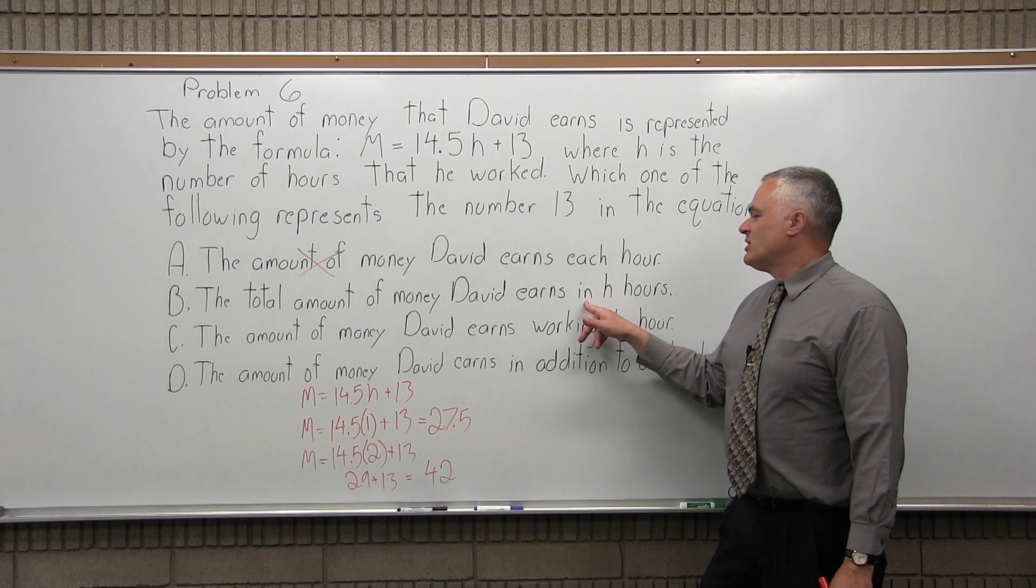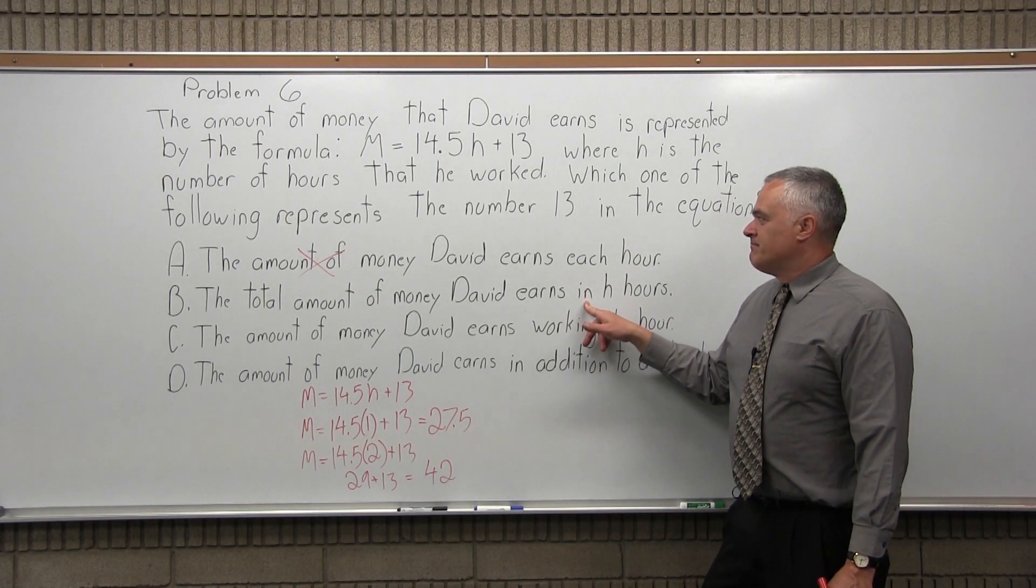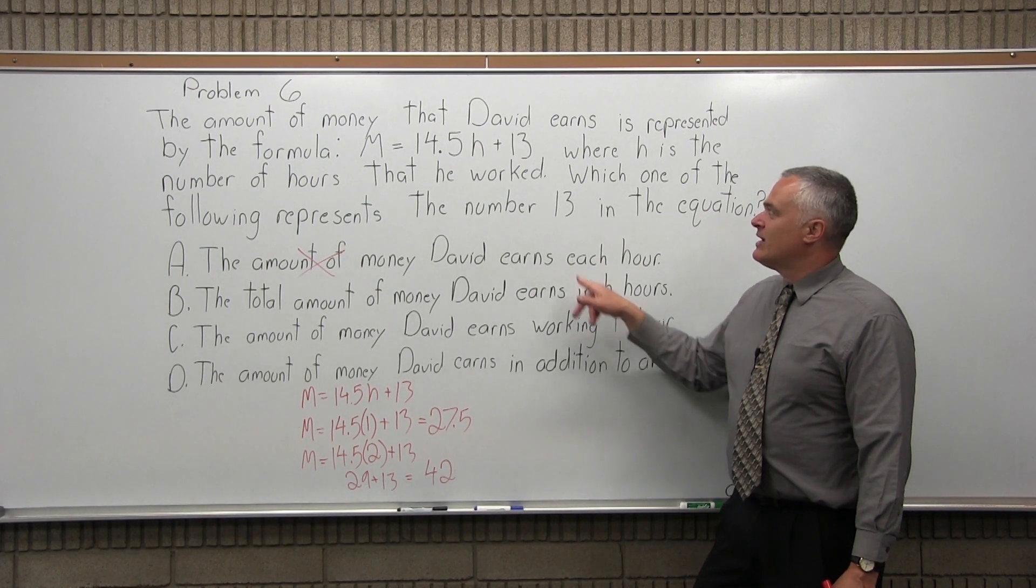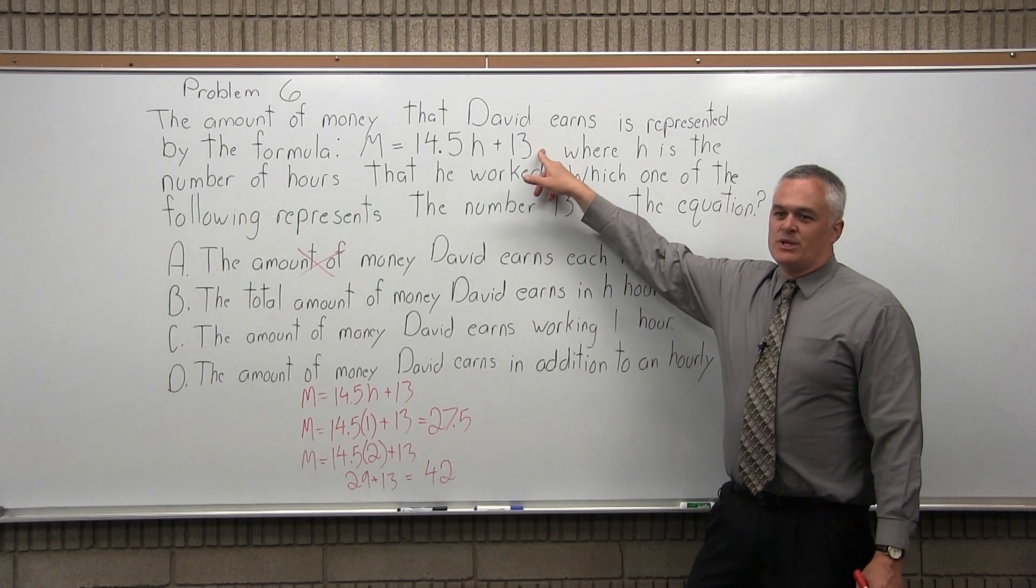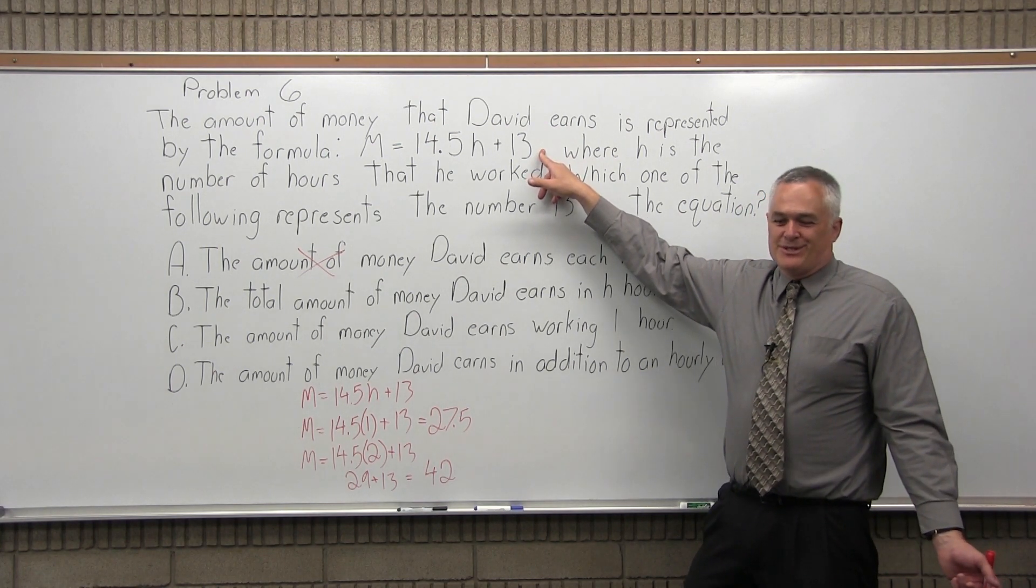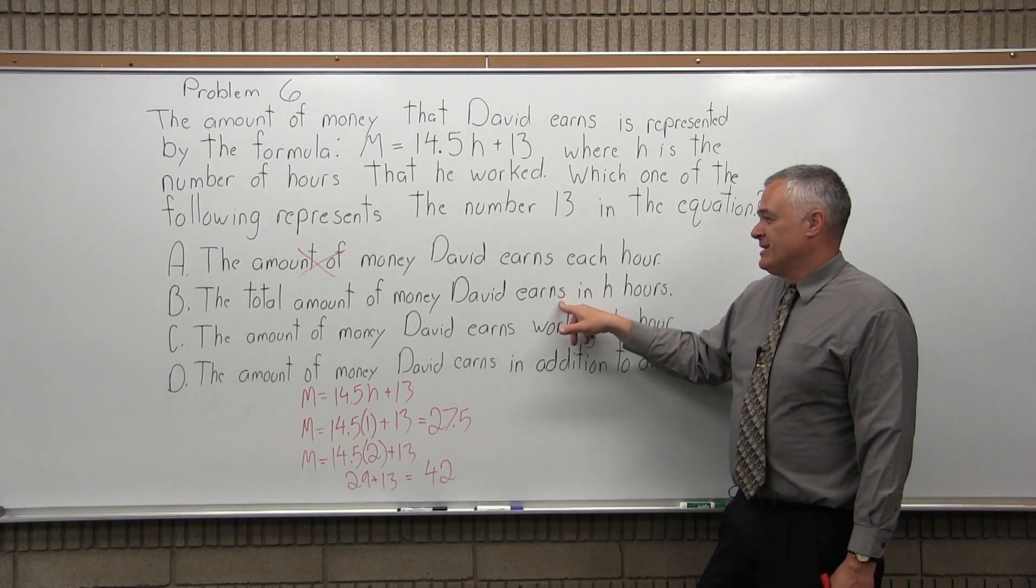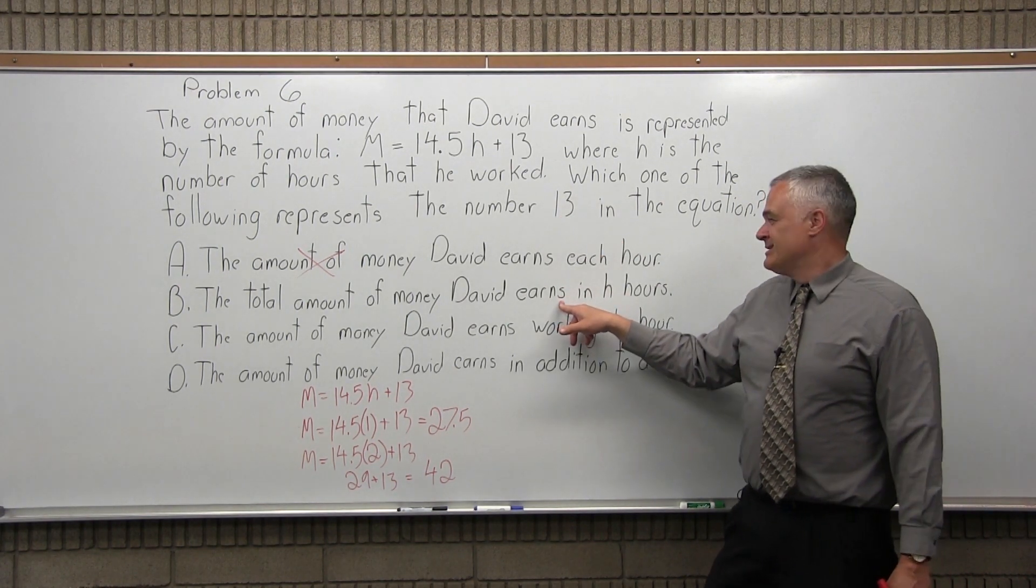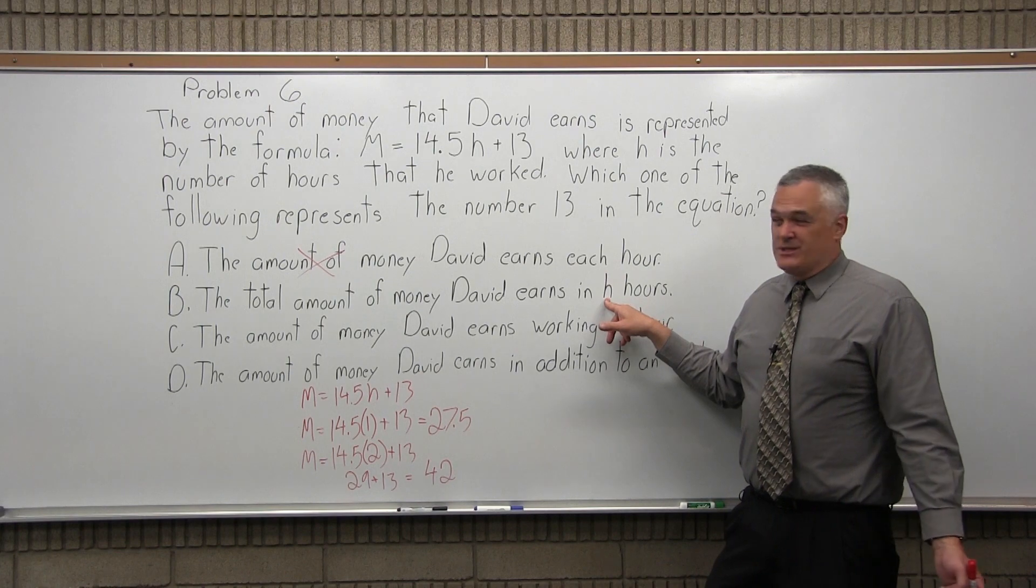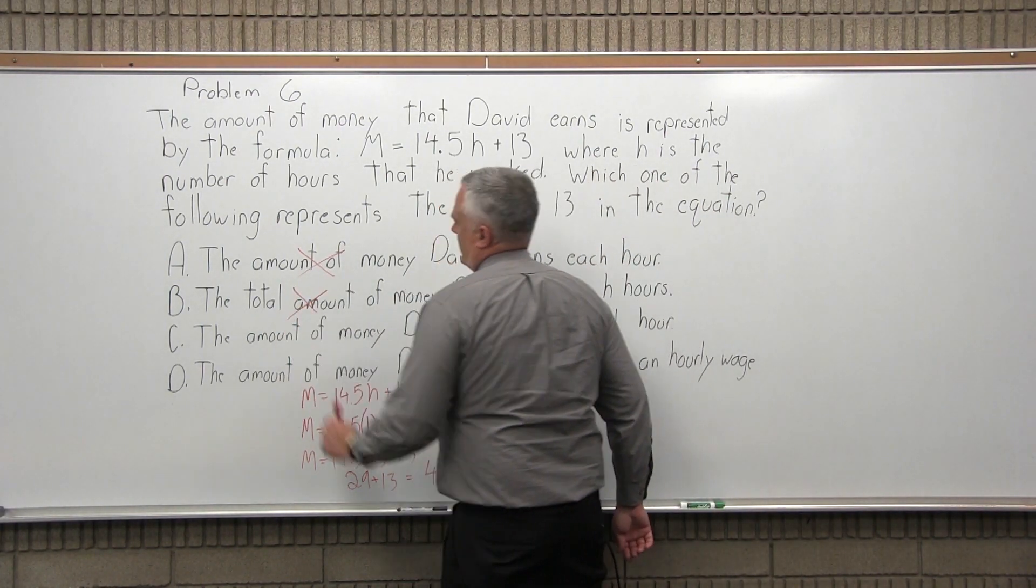B, the total amount of money that he earns in H hours. Could it be that? Is that what the 13 is? Well, he's not always making 13 dollars, no matter how many hours he works. So it's not that. It's asking, what does the 13 represent? Does it represent the total amount of money he makes for how many hours? Is he always making 13 dollars, even if he works like 60 hours? No, it can't be that one.